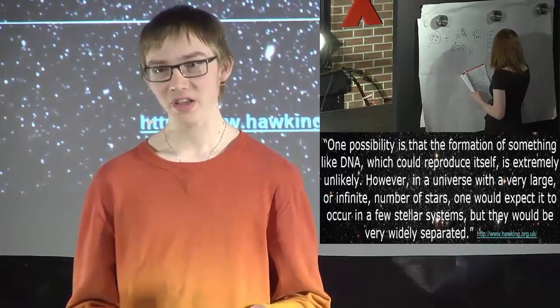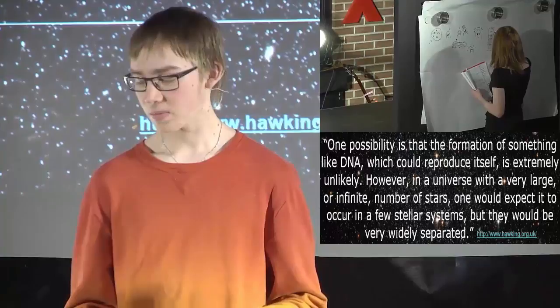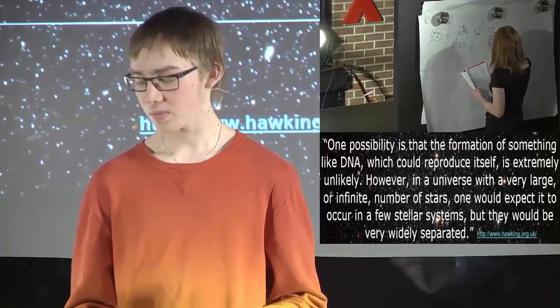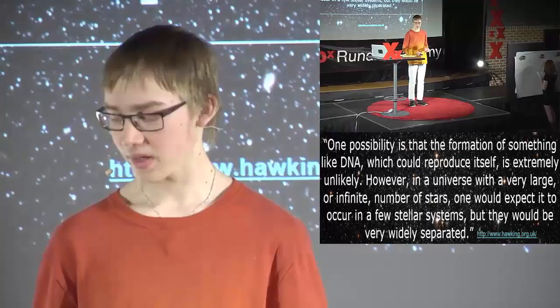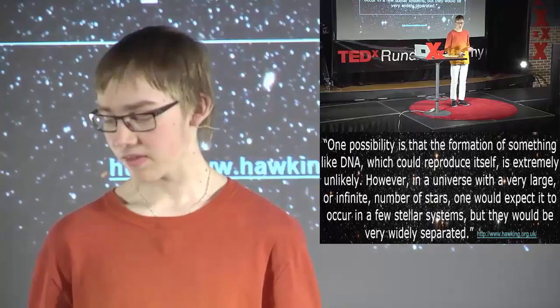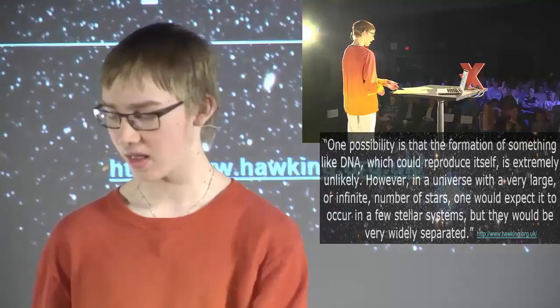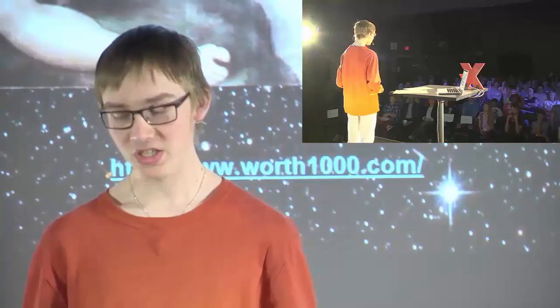However, in a universe with an extremely large or infinite number of stars, one would expect it to occur in a few stellar systems, but they would be very widely separated. This shows that Stephen Hawking, a renowned scientist, believes that there is a possibility of alien life in the universe. My opinion regarding this formula and the idea that we can calculate alien life is that although this equation may not be fully accurate, and some of the variables might have to use estimates, this is still a very efficient way to calculate alien life. And who knows? Maybe someday humans will actually encounter alien life. And when we do, life will, without a doubt, change forever. Thank you.